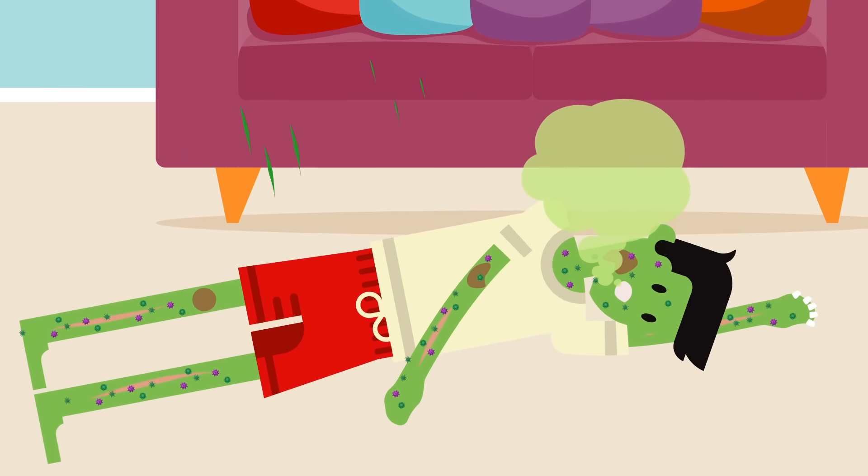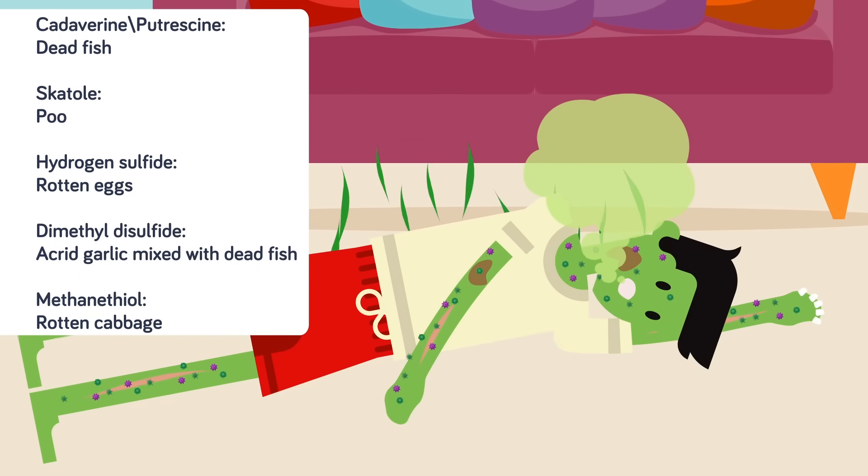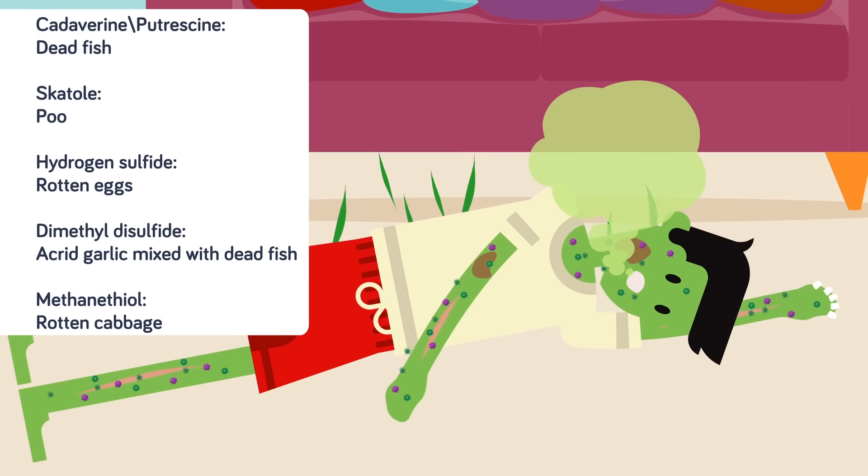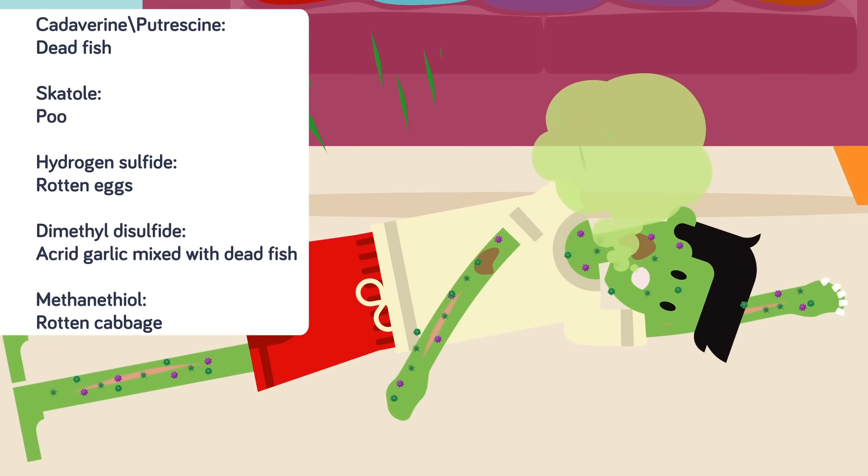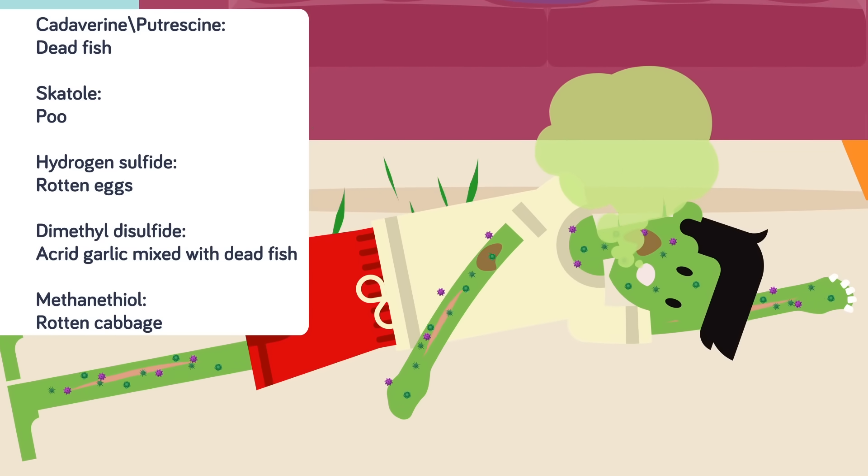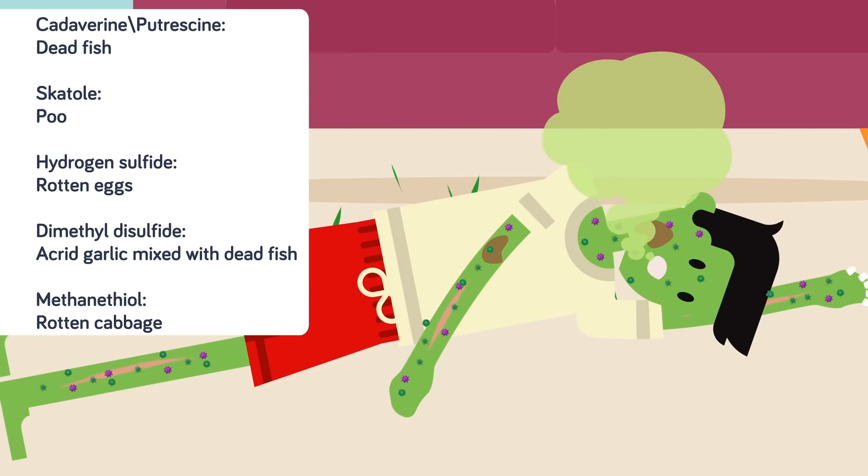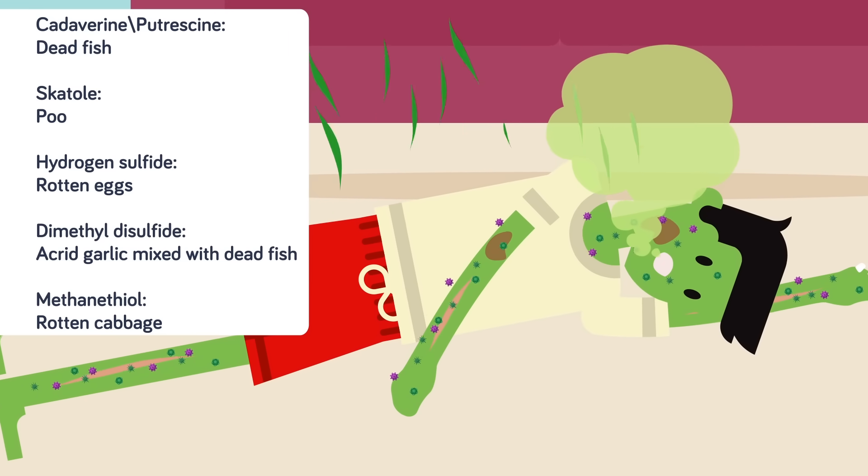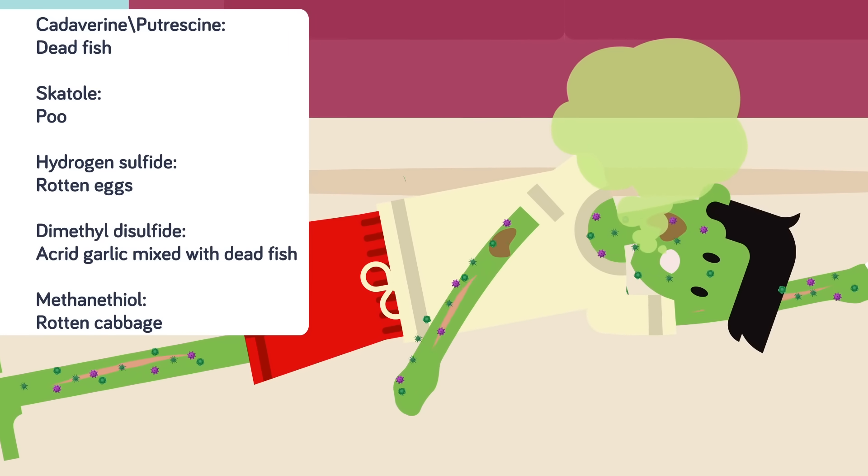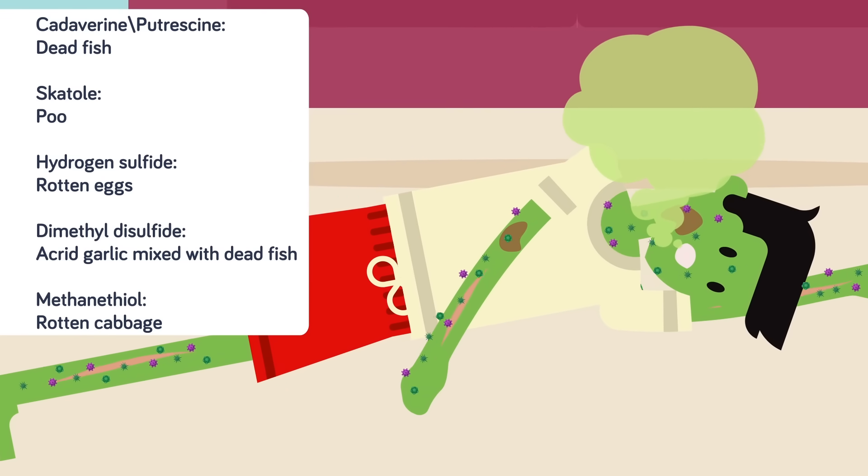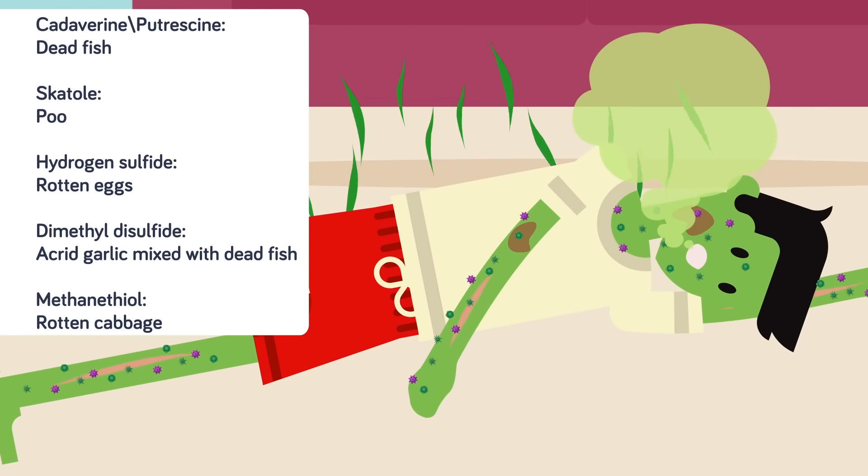If you want to know why dead bodies smell so bad, you need to know what gases are emitted from the corpse. One called cadaverine is renowned for having the malodor of rotten fish. Putrescine also has notes of dead fish. Skatole smells like poo. Hydrogen sulfide smells like rotten eggs. Dimethyl disulfide smells like acrid garlic mixed with dead fish. And methanethiol has the distinct smell of rotten cabbage. Altogether, this medley of gases makes dead people not the best folks to have around as housemates.